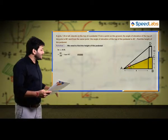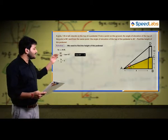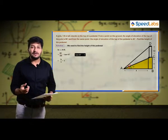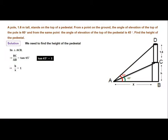tan 45° equals h/x. The value of tan 45° is 1, so x equals h. Now we do the same thing for triangle ADB.